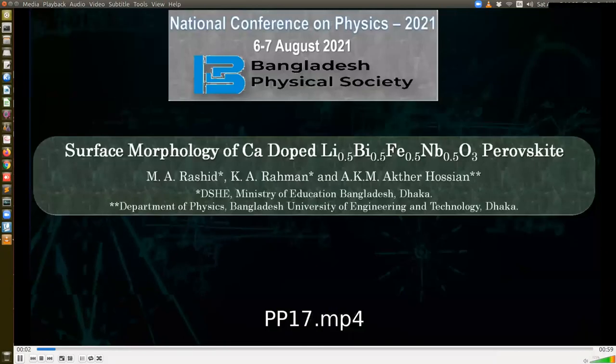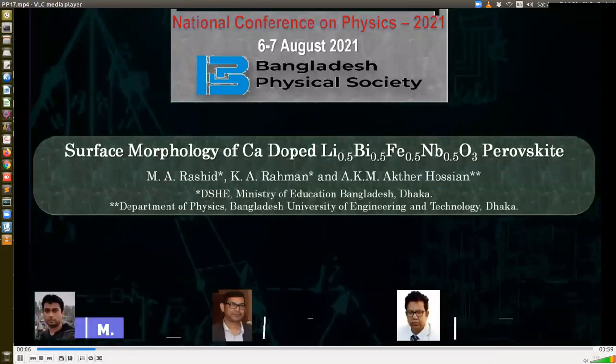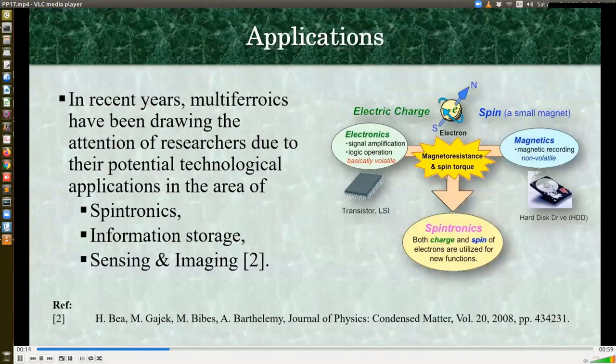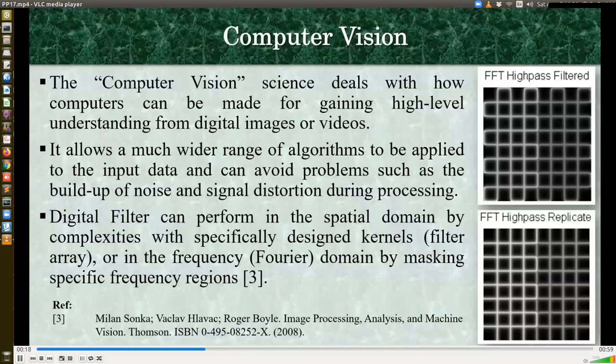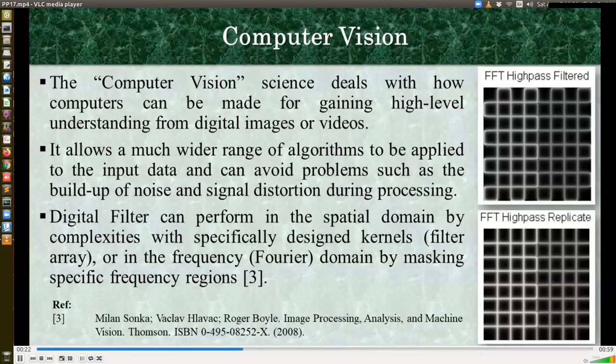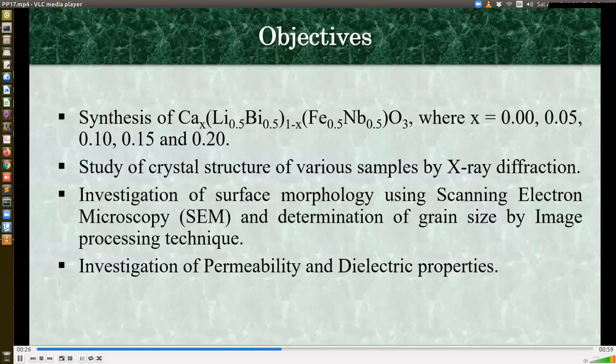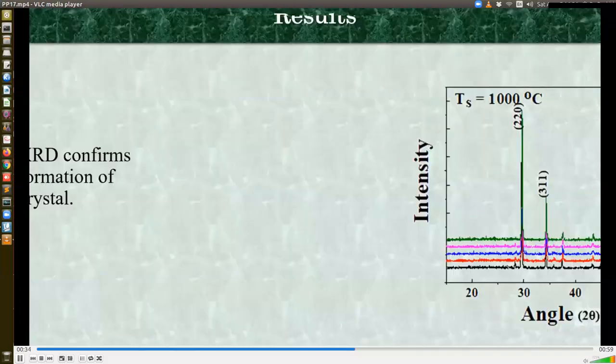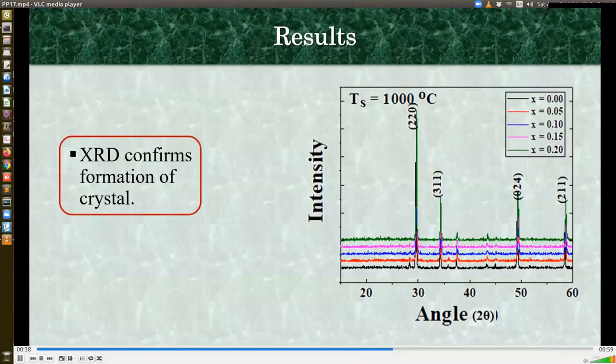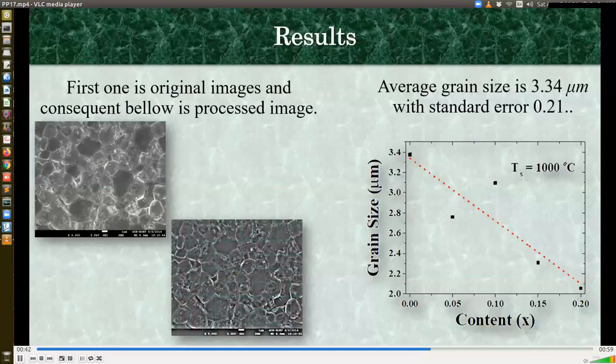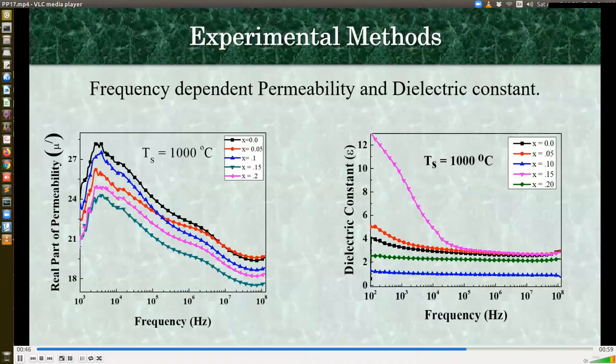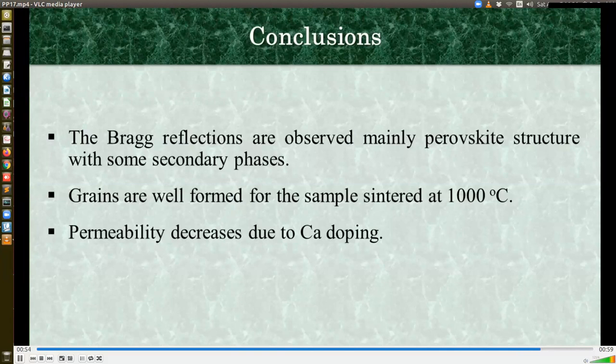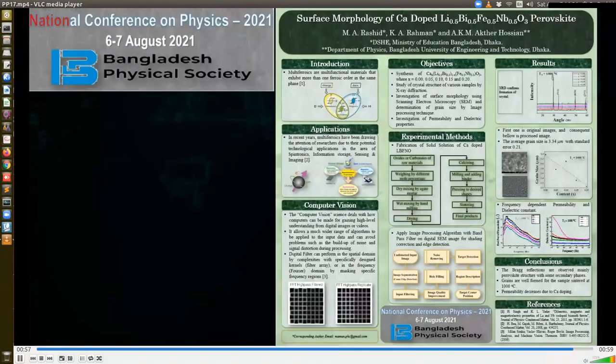Welcome to my presentation. Here is my poster title: Surface Morphology of Calcium-Doped Lithium Bismuth Iron Niobium Oxybismuth Ferrite. I am the co-author along with my respective co-authors. We know that multiferroics have more than one ferroic order, and they have potential applications especially in spintronics devices. On the other hand, computer vision science deals with gaining high-level information from digital images or videos, which may be a great tool for surface morphology studies. Here is our objectives, and here is the experimental methods. Left one is the flow diagram of sample preparation technique, and right one is the flow chart of image processing algorithm. Now the results. The XRD confirms crystalline structure. Average grain size is 3.34 micrometer using linear intercept method. And here is the results of EDX analysis. In conclusions, all prepared samples are mainly perovskite. Grains are well formed at 1000 degree Celsius temperature, and permeability decreases due to calcium doping. These are all in the article. Thank you.